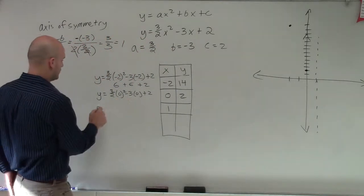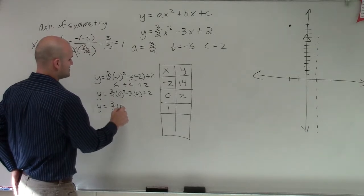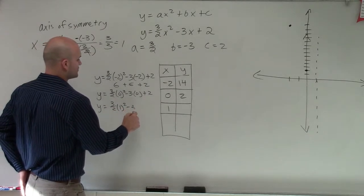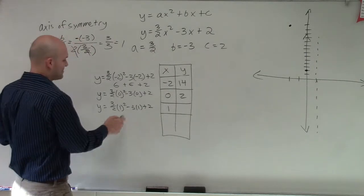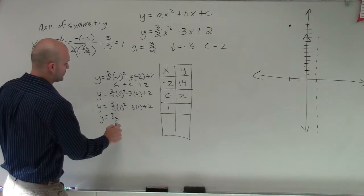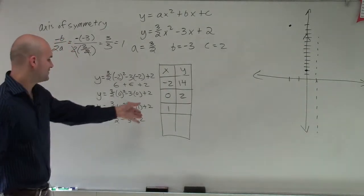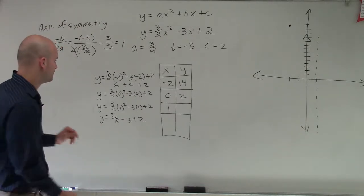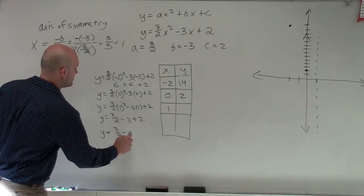And then let's go ahead and plug in 1. So y equals 3 halves times 1 squared minus 3 times 1 plus 2. And this is what I was trying to avoid, because we're going to get some math here. 1 squared is going to be 1. So I'm going to have y equals 3 halves minus 3 plus 2. Well, negative 3 plus 2 is going to be negative 1. So it's really going to be y equals 3 halves minus 1.